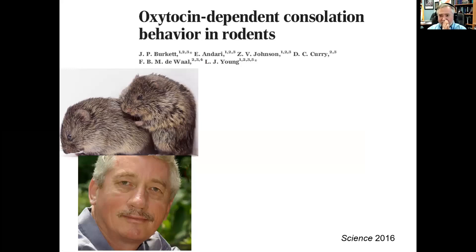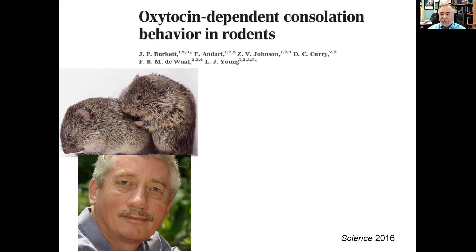We can study behaviors besides pair bonding in these voles. We did collaboration work with Frans de Waal, who was interested in empathy mostly in chimpanzees and other primates. We wanted to see if voles would show empathy-like behavior. Our reason was that since these animals are monogamous and the female is usually always pregnant, you'd expect the male would have evolved a behavior to detect when the partner is distressed and try to relieve that distress — because if the partner is distressed, elevated cortisol could negatively impact the developing offspring.